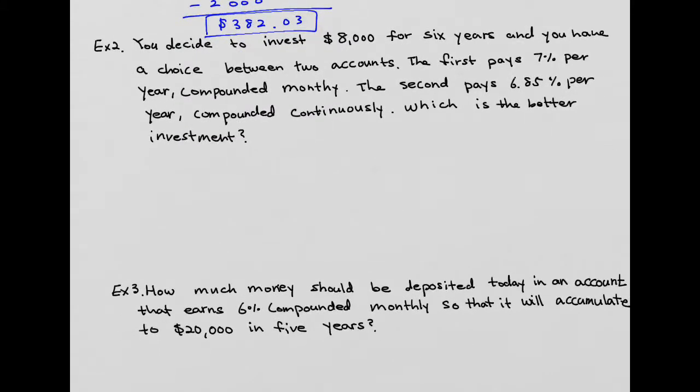In the first one, compound monthly, when we plug into the formula, we're going to get amount equals principal times 1 plus 0.07 over 12, because it's monthly. N becomes 12. N times T, how long? 6 years.